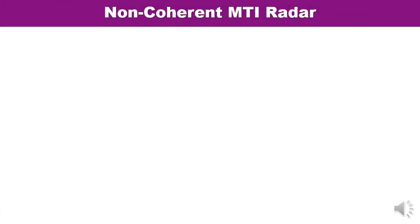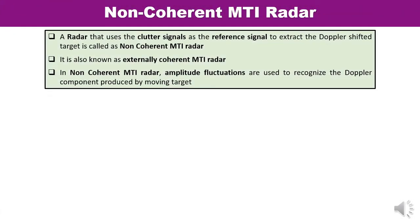To start with understanding what is non-coherent MTI radar, let us first differentiate between coherent and non-coherent. The echo signal received from a moving target or from clutter fluctuates both in amplitude and phase. When MTI makes use of phase fluctuation, it is known as coherent MTI. And when amplitude fluctuation is considered, that is known as non-coherent MTI.